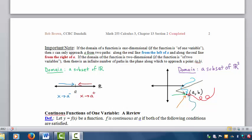Let's start with an important note on page 2. If the domain of a function is one-dimensional, if the function is of one variable, then x can only approach a from two paths, along the real line from the left of a and along the real line from the right of a.